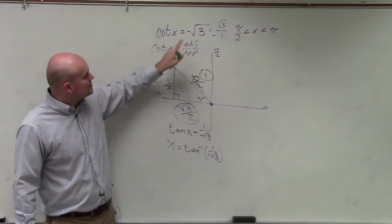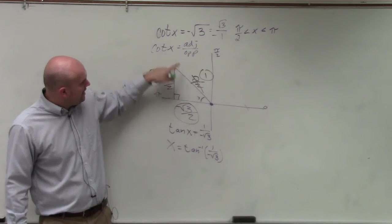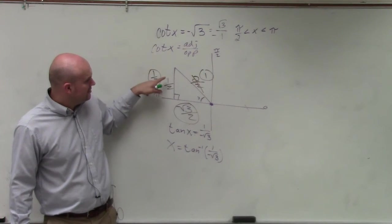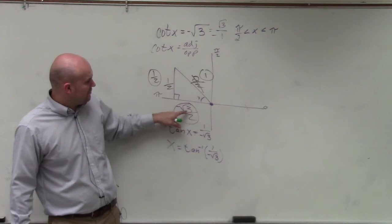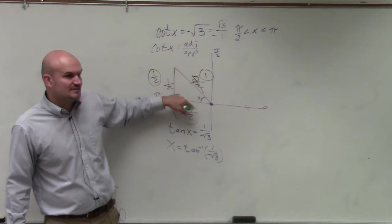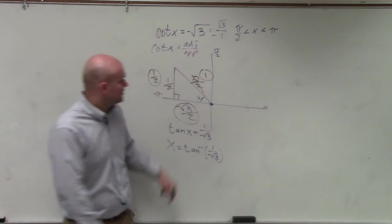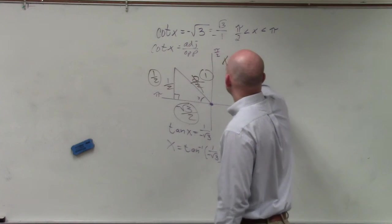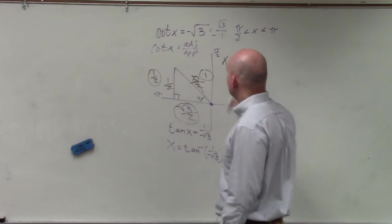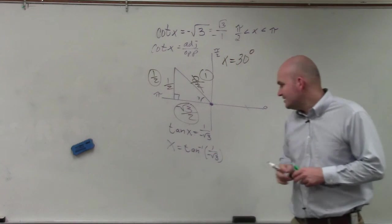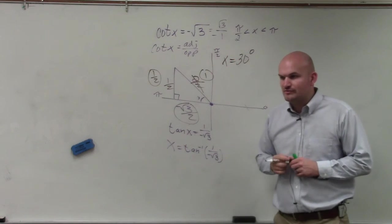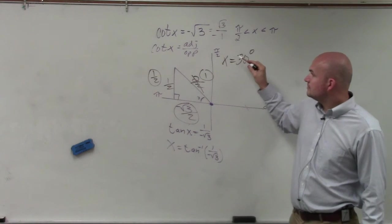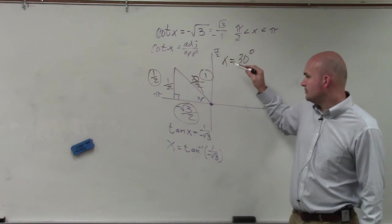which is a little bit more familiar with me with 30-60-90 triangles. So, what angle, what would this angle be when the opposite side is 1 half, and over here, is that the 30 or is that the 60? That is your 30 degrees. So, therefore, x is equal to 30 degrees, and what was the tan inverse of 1 over negative square root of 3? Negative 30 degrees.